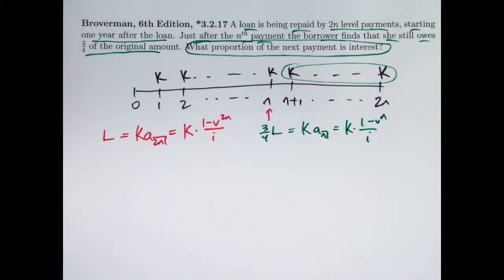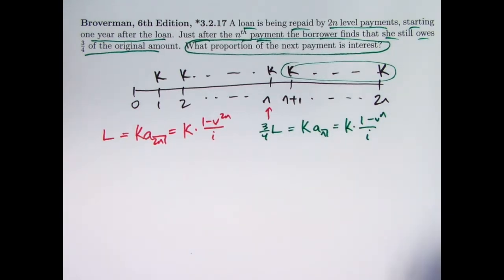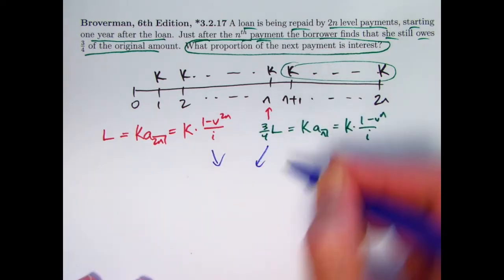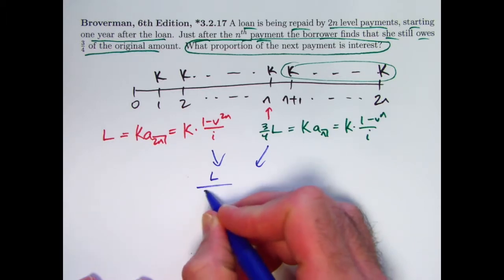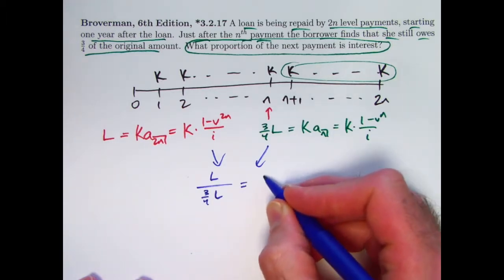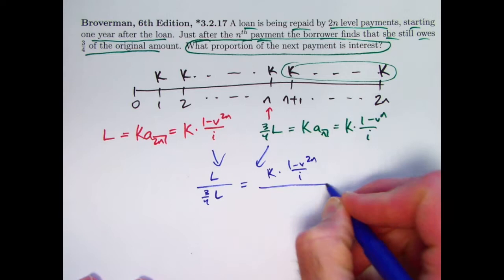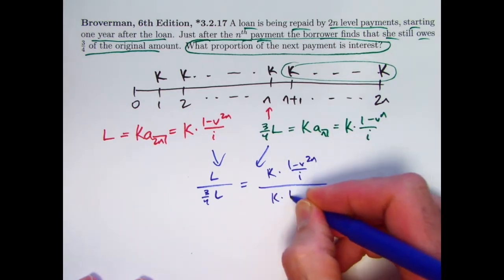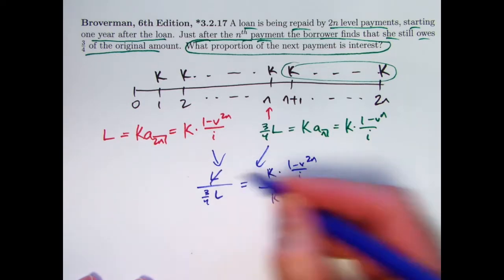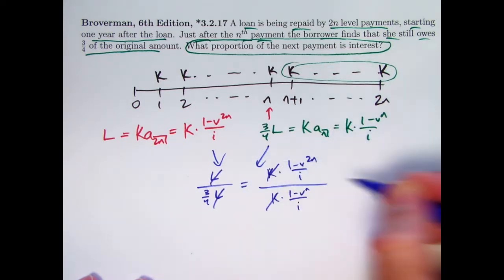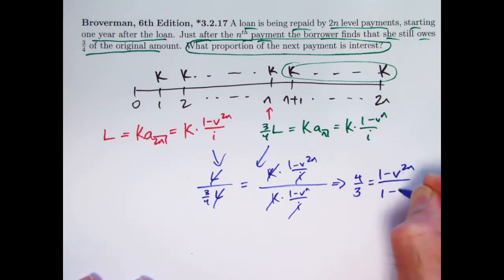Then I looked at these two equations and said, if I divide one equation by the other, say the first by the second, I'm going to get some cancellation. The L's will cancel, the K's will cancel, the I's will cancel. I could write L over three-fourths L equals K(1 - V^(2N))/i over K(1 - V^N)/i. I can rewrite 1 over three-fourths as four-thirds. So four-thirds equals (1 - V^(2N))/(1 - V^N).